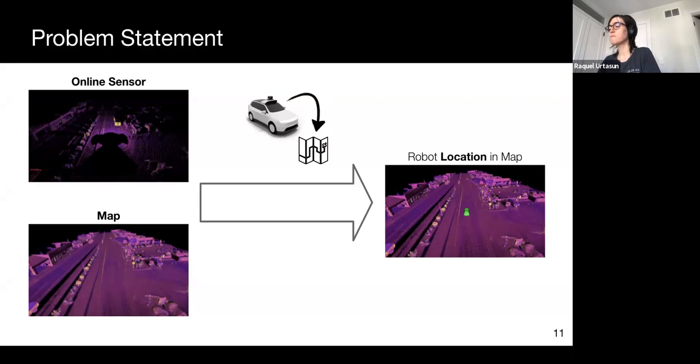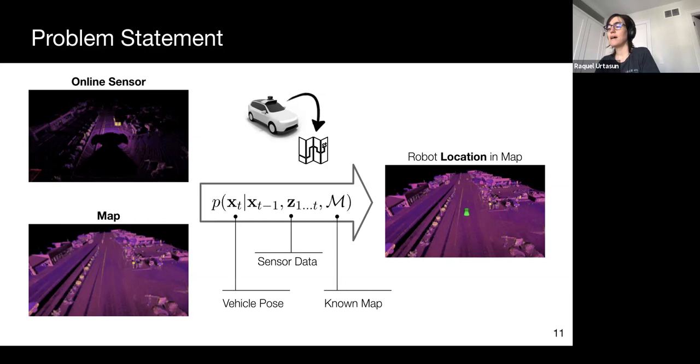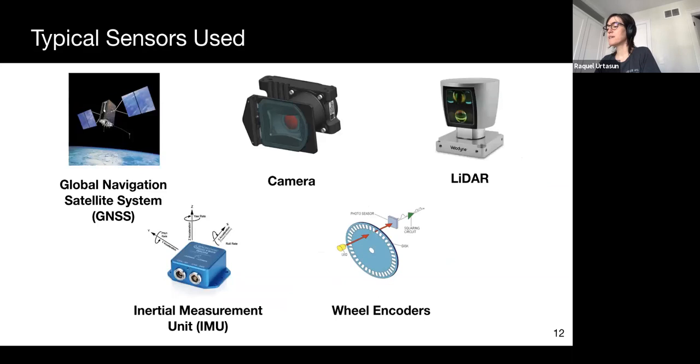Formally, we wish to model the robot's belief over the state space, where for localization, the state space corresponds to the robot's pose in the world. We denote the pose at the current time by x_t, the observations by z, and M denotes the prior map.